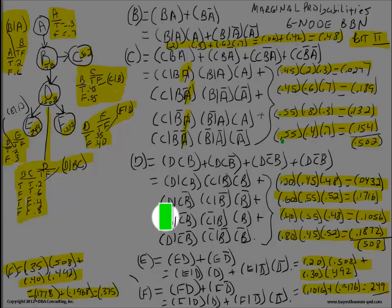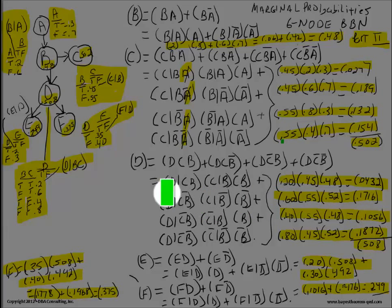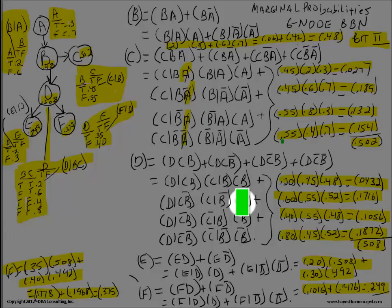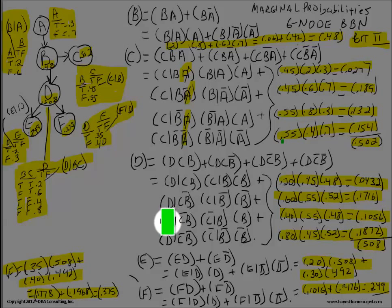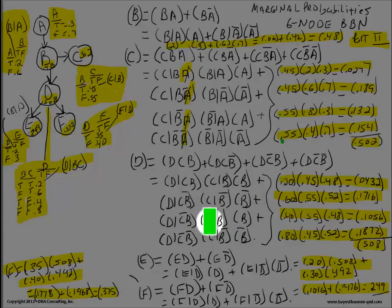Probability of D given C and not-B is 0.6, times probability of C given not-B which is 0.55, times probability of not-B which is 1 minus 0.48 = 0.52. Multiply these together, you get 0.1716. Third term: probability of D given not-C and B is 0.4, times not-C given B which is 0.55, times probability of B which is 0.48. Multiply these together, you get 0.1056.